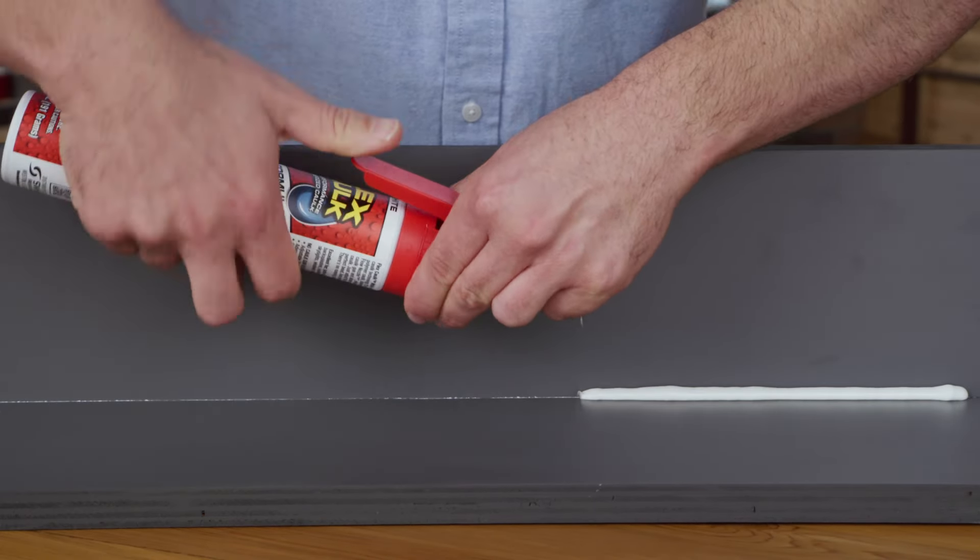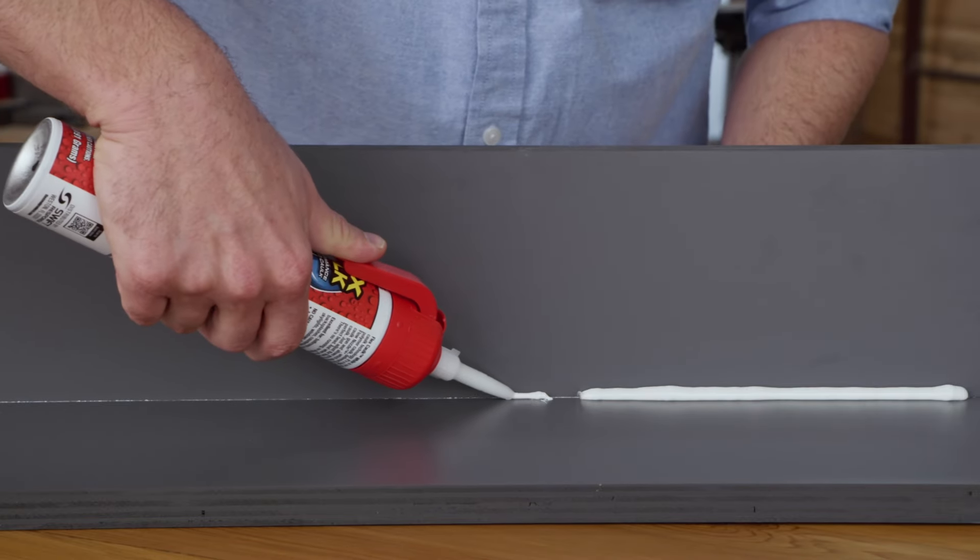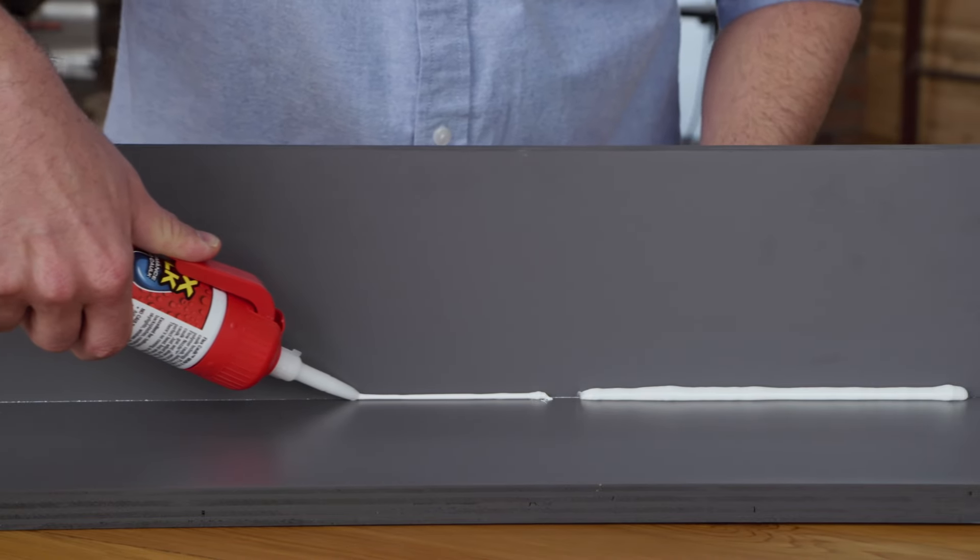And as you turn the trigger nozzle towards the minimum position, it reduces the flow of the caulk. It's that easy.